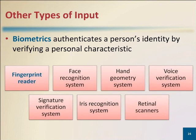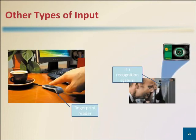Biometrics is the technology of authenticating a person's identity by verifying personal characteristics such as fingerprints, hand geometry, facial features, voice, signatures, and eye patterns. The most widely used biometric device is a fingerprint reader. A fingerprint reader and iris recognition system are shown on this screen.